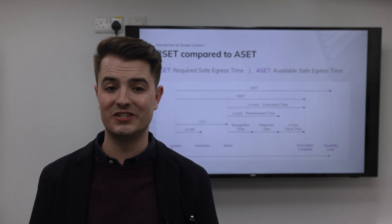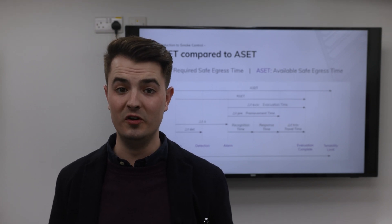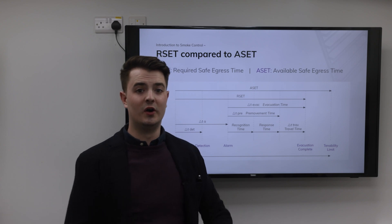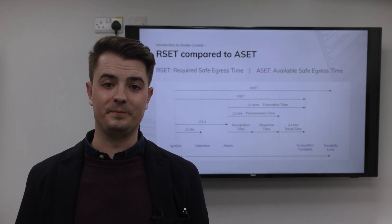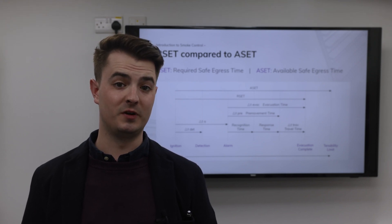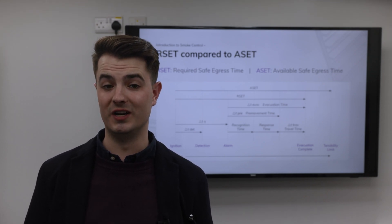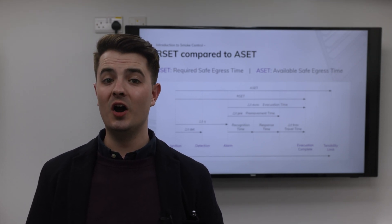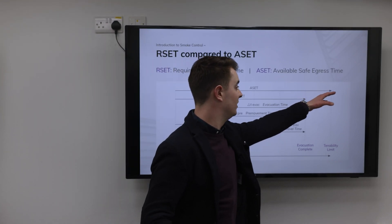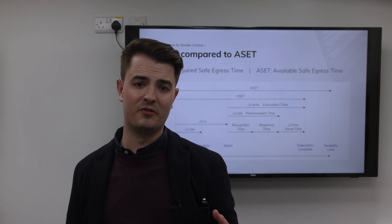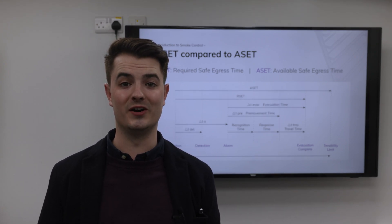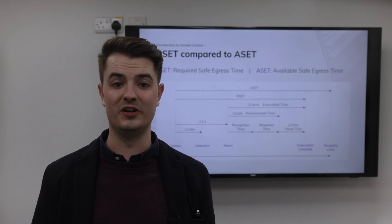By adding together the detection time, the pre-movement time, and the movement time, we get the RSET for the building. As this is a theoretical approach using computer models, the results are then multiplied by a safety factor to make sure it's as realistic as possible. Finally, we compare the ASET to the RSET, and provided the required safe egress time is shorter than the available safe egress time, then safe fire evacuation is ensured.